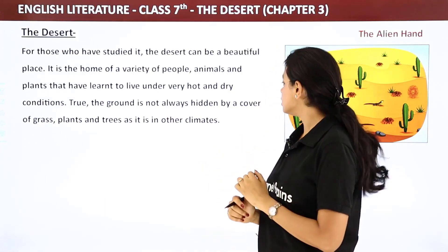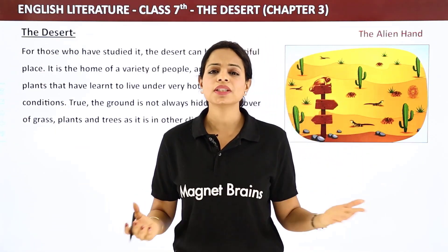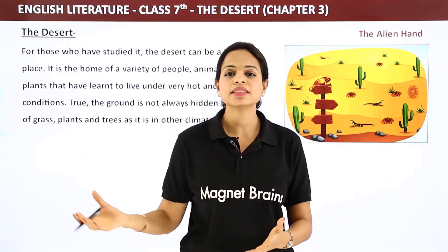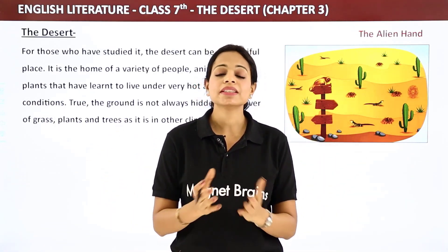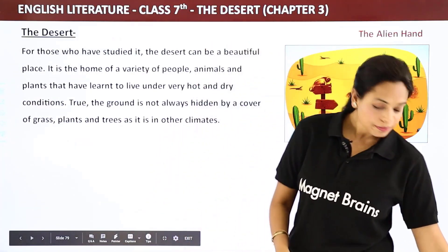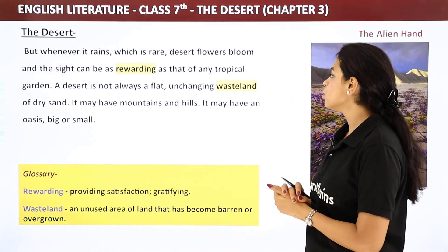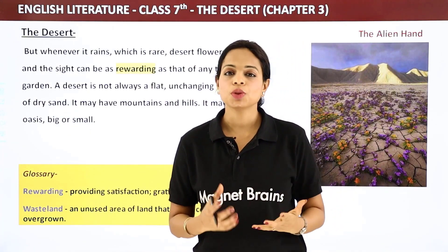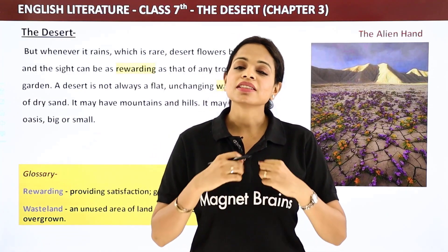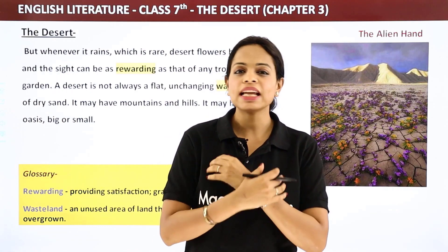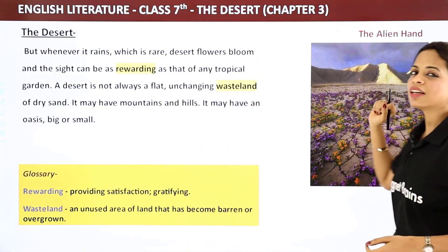True, the ground is not always hidden by a cover of grass, plants and trees as it is in other climates — the ground is dry. Hamare dhar pe har jagah thodi door mein aapko ghaas dikti hai, chhote chhote baroos — it's green everywhere. Wahan pe aisa nahi dikhega. But uski ek alag hi beauty hai. Whenever it rains, which is rare, desert flowers bloom and the sight can be as rewarding as that of the tropical garden. You can see so many pretty flowers in this picture.